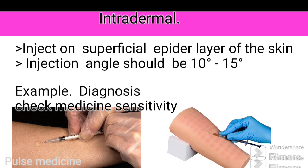Intradermal: doctors give intradermal injection just below the surface of the skin, creating a small bump called a bleb or a wheal. The intradermal injection route has the longest absorption time of all the different types of injections. The injection angle should be 10 to 15 degrees, and it is effective on the epidermal layer of the skin.